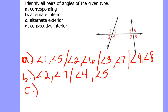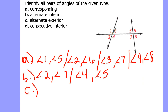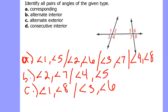Next are alternate exterior angles. 'Alternate' still means opposite sides of the transversal, but 'exterior' means outside of the two lines being cut — outside of the sandwich, so to speak. The pairs of alternate exterior angles here are angle 1 and angle 8, and angle 3 and angle 6.